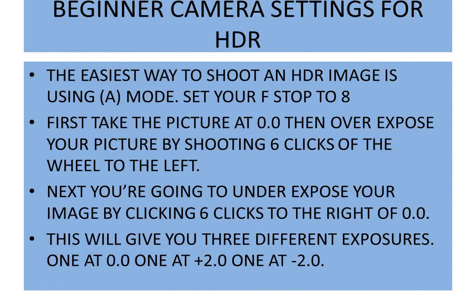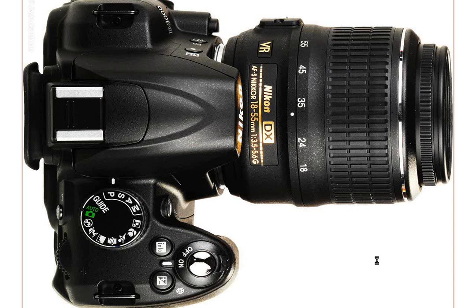Moving on to actually how to do this — you'll want to have your camera on A mode, that's aperture priority mode. When you're in aperture mode, you can select the f-stop. A good f-stop to start with is f8; it's a sweet spot on a lot of these lenses. So that's where I want you to start practicing — f-stop 8. Once you're there, you need to have your exposure compensation on 0.0, which is usually a good-looking picture, so you'll take that picture first. Then you'll overexpose the image by changing your exposure compensation to plus 2.0, and then you'll underexpose it to minus 2.0.